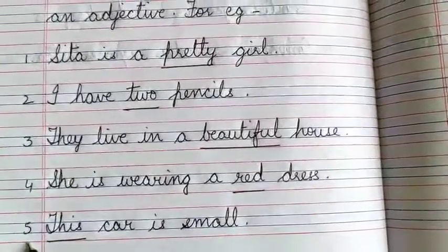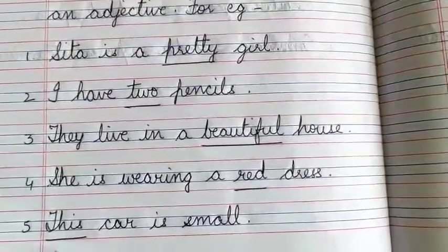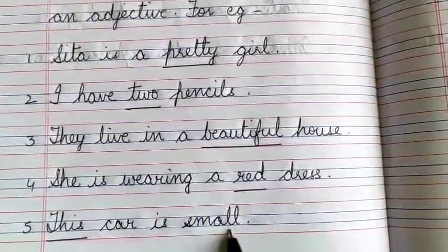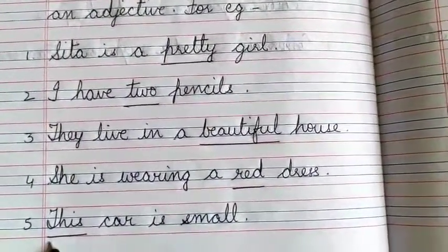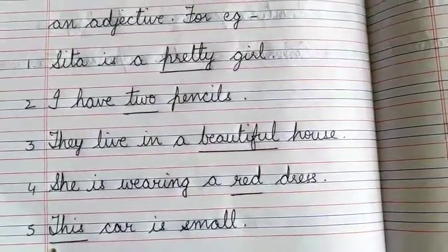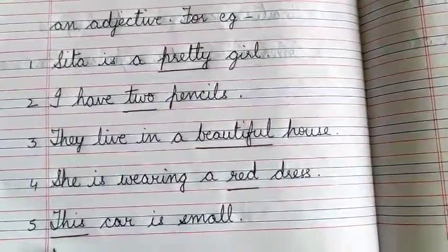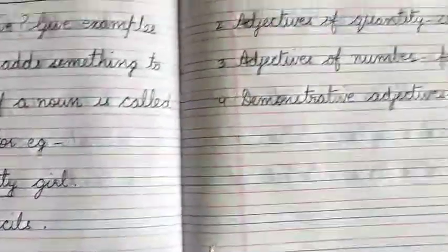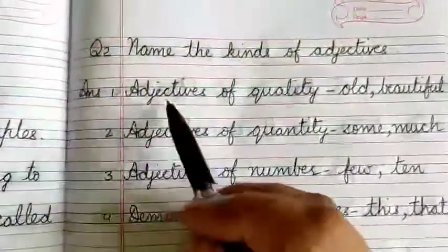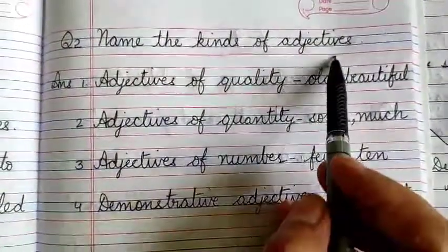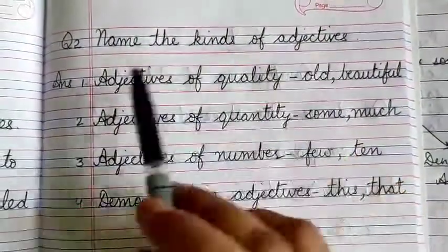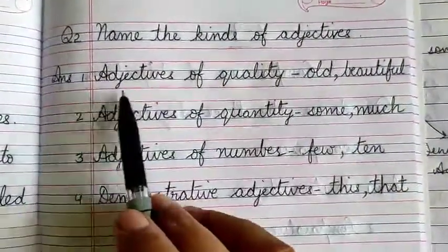And the last example, number 5: This car is small — underline 'this'. Now let's move on to question number 2: Name the kinds of adjectives.